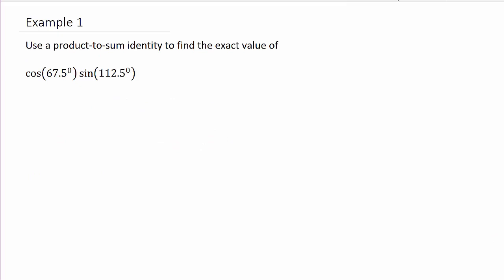So let's go ahead and just write down the formula so we'll have it here. Cosine a sine b is equal to one half sine a plus b minus sine a minus b. So that's the one we'll use, because we've got cosine times sine.